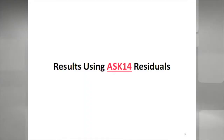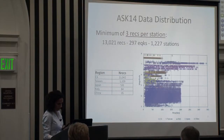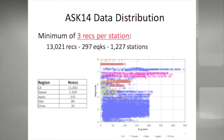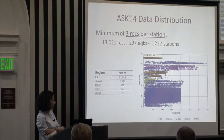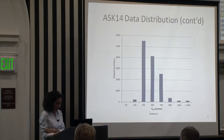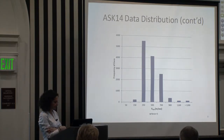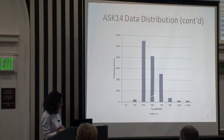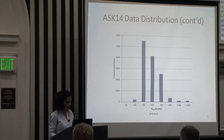Starting with the Abrahamson et al. residuals: if I choose a minimum of three recordings per station, I end up with 13,000 recordings, 297 earthquakes, and over 1,000 stations. Most of these recordings come from California. Some data is from Taiwan, and fewer from Japan, Italy, and China. The frequency of recordings versus VS30 shows most data comes from VS30 between 250 and 700 meters per second.